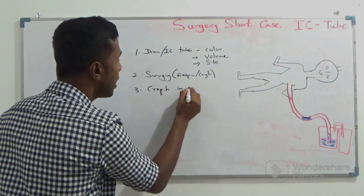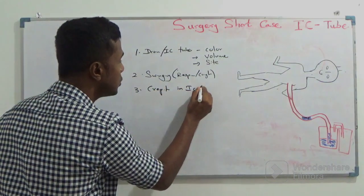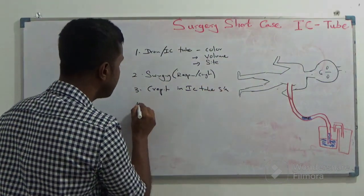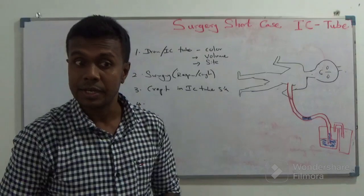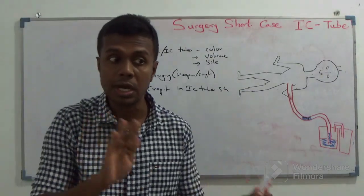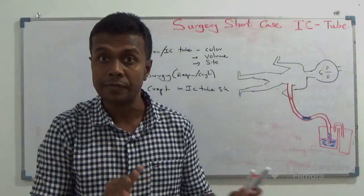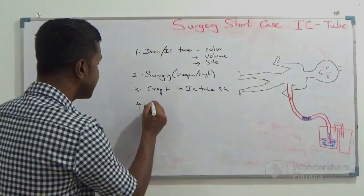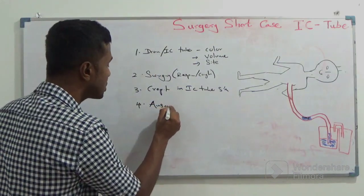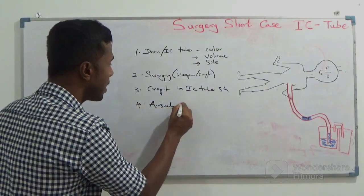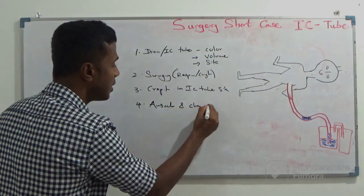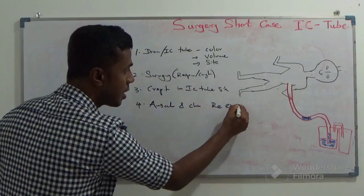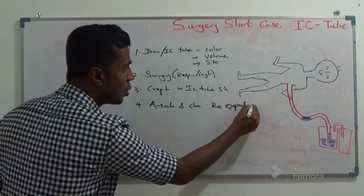Check for crepitus at the IC tube site. Finally, you have to auscultate and check whether the lung has re-expanded or not.